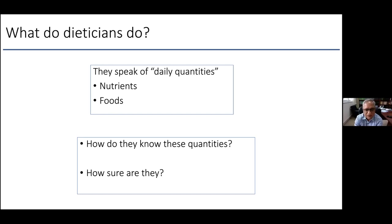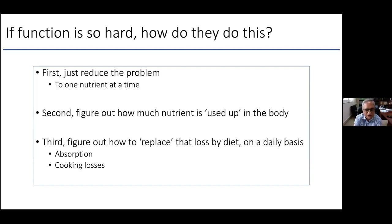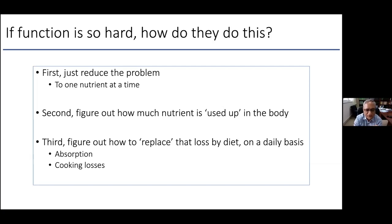If you ask dietitians how sure they are about these nutrient quantities, you'll find that dietitians and nutritionists become what we call reductionists. They reduce the problem to one nutrient at a time, figure out how much you lose from your body daily, and then figure out how to replace that loss, correcting for poor absorption or cooking losses. They are reductionist in their approach, looking at one nutrient at a time, on a day-to-day basis.